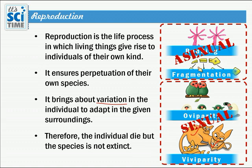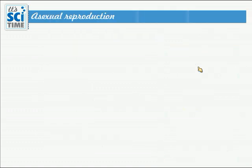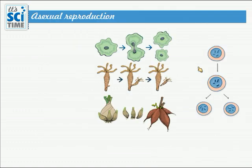Our next step is to compare asexual reproduction and sexual reproduction. Here is a picture through which we can discuss the special characteristics of asexual reproduction. If you take your tutorial, on the first page there is a table where these characteristics are compared. Let's move on to the characteristics of asexual reproduction. First: how many organisms are involved?